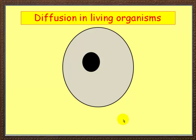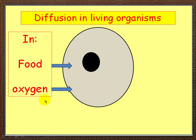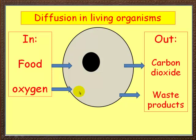Let's look at living organisms. Here's a very simple animal cell. Let's think about what has to diffuse into an animal cell — food and oxygen need to diffuse in. And coming out, the cell loses carbon dioxide and waste products, again by diffusion.